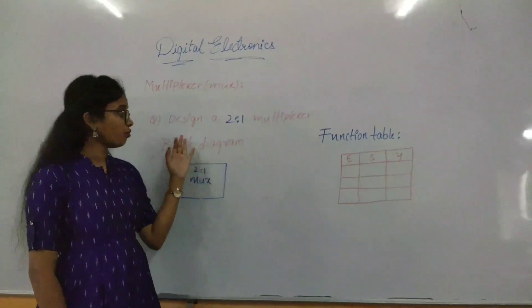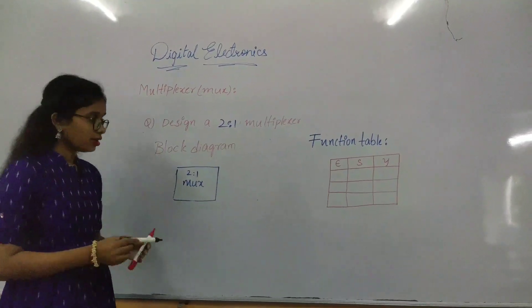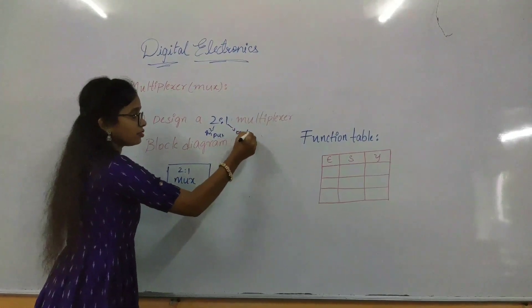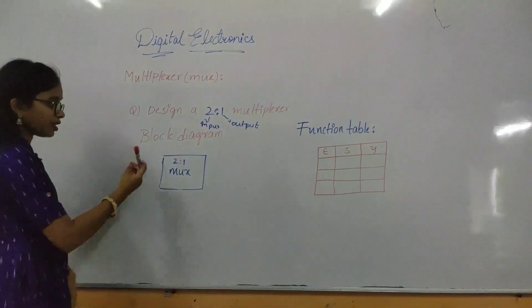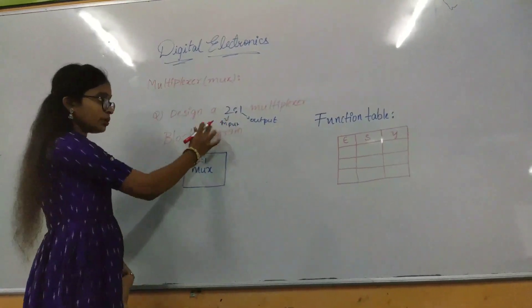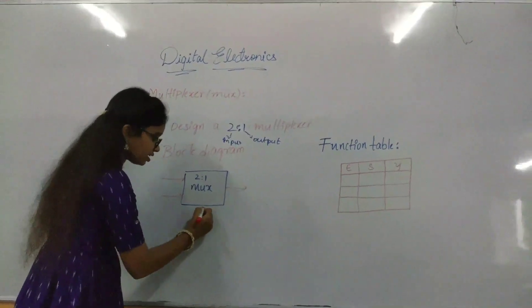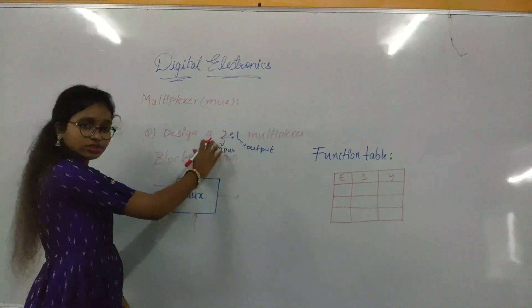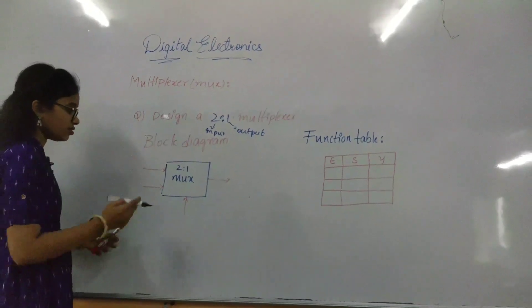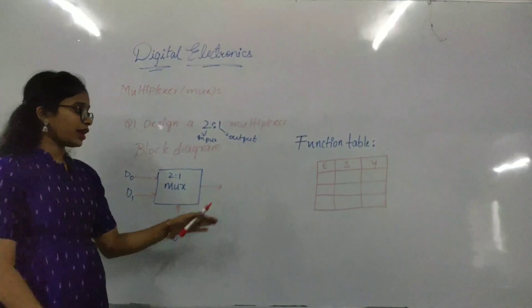Now let us have an example of a multiplexer — design a 2-by-1 multiplexer. Here, the 2 means the number of input lines and 1 is the number of output lines. The block diagram consists of two input lines and one output line. Since 2-power-N equals 2, N equals 1, so there is one selection line. The input lines are denoted as D0 and D1, the selection line is denoted by S, and the output line is denoted by Y.